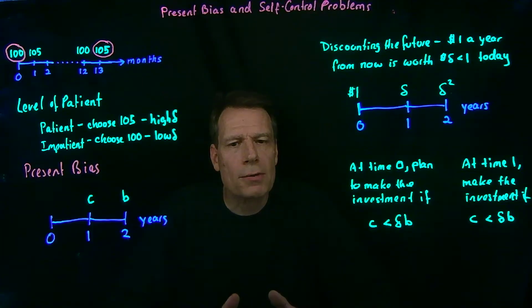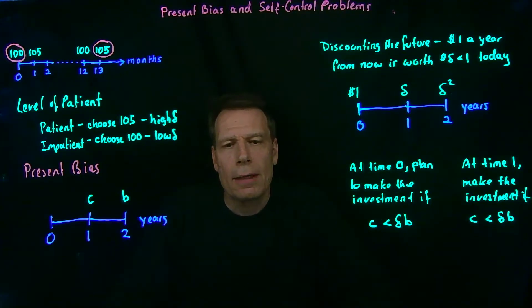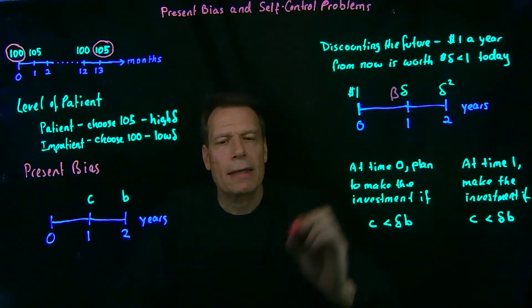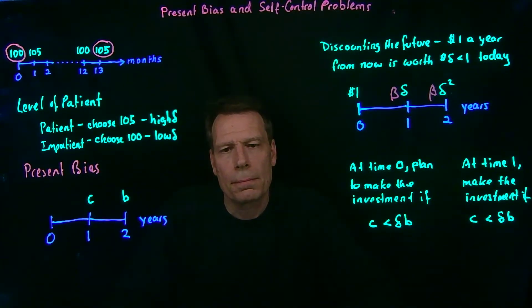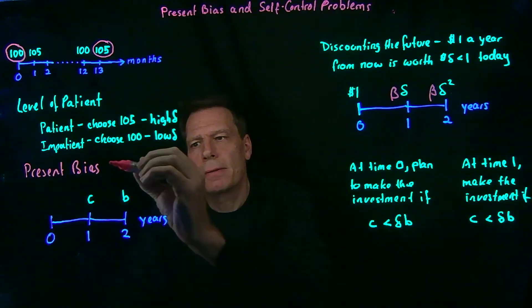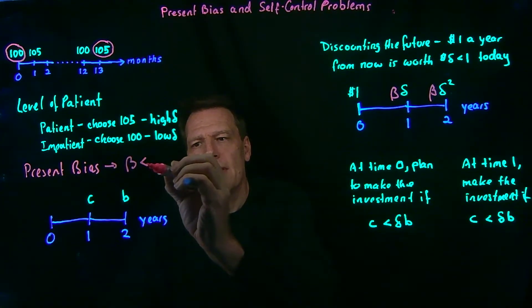Well, it turns out that there's a simple way to do it. Instead of assuming that people discount the future in the way that we described in the previous module, we simply add another term called beta. We add another term here and another term here. That beta represents present bias. So that beta represents present bias if it's less than one.